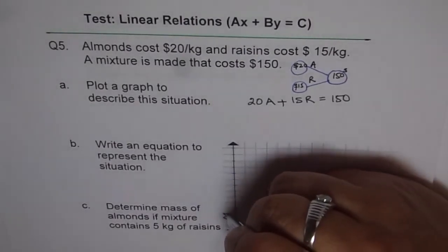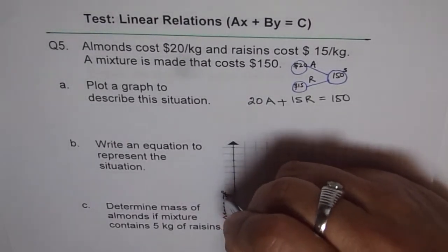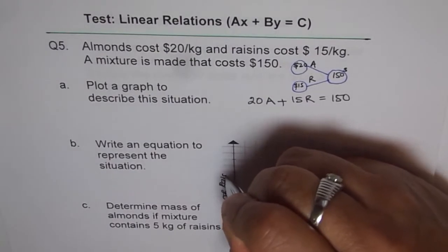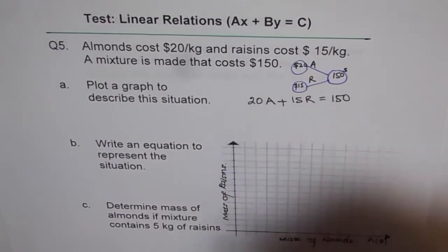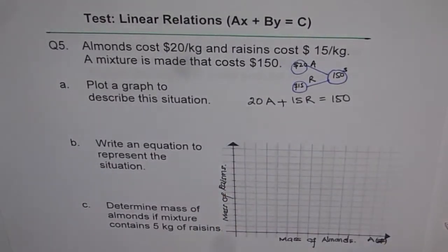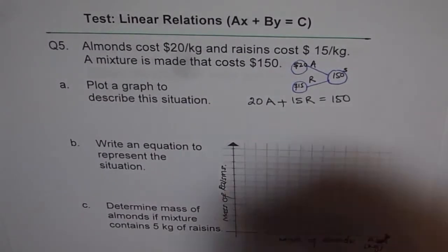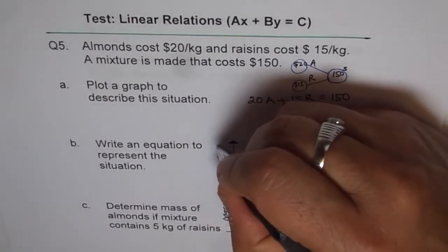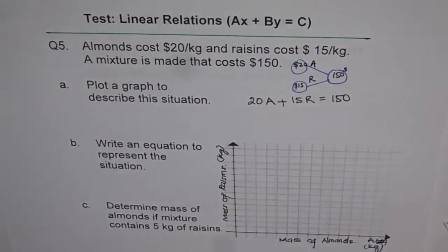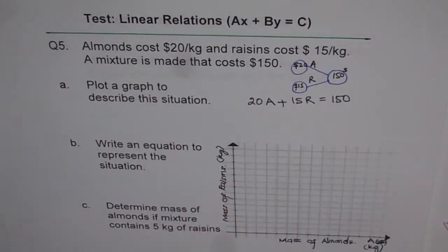So let me write here, mass of raisins. And this mass, actually this is in kilograms. Will be in kilograms. So this is in kilograms. Now when we multiply this mass with the rate, we get the amount.